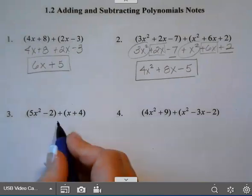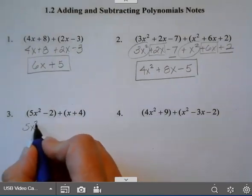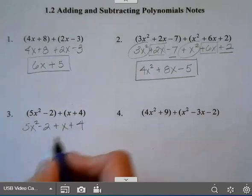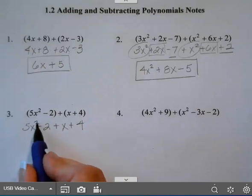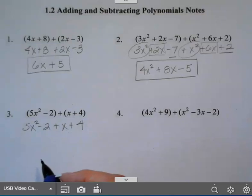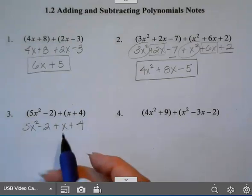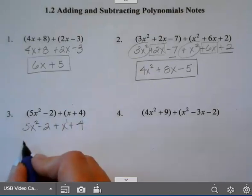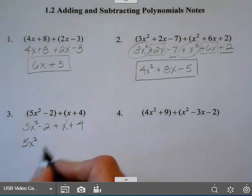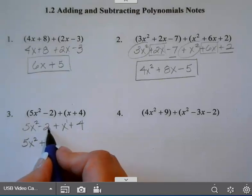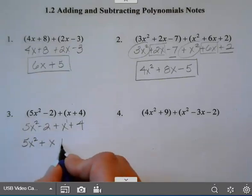Example 3, again I have a plus so I can just drop my parentheses. I only have one negative 5x squared term. This is x to the first, so they're not like terms — even though they have the same variables, the exponents are not the same. So 5x squared stays. I don't have any other x's. The only thing I can combine are my numbers: negative 2 plus 4 gives me plus 2.